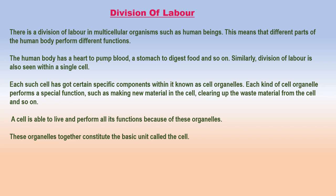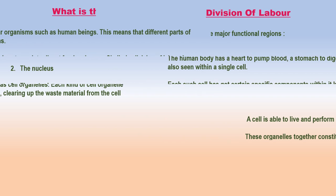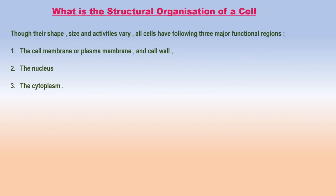Quite interestingly, all cells are designed to have the same basic structure, no matter what their function is or what organism they are found in. Though their shape, size, and activities vary, all cells have the following three major functional regions: the cell membrane or plasma membrane and cell wall, the nucleus, and the cytoplasm.